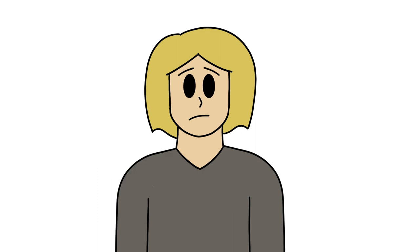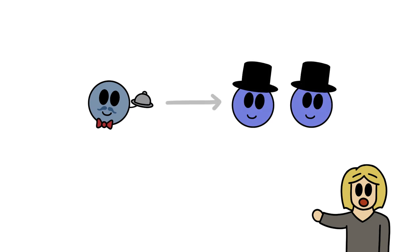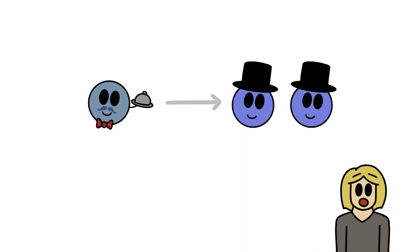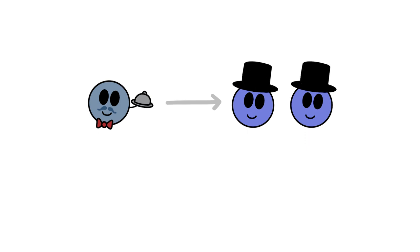The decay of a particle with a specific type is not always the same. We can't say that the Higgs particle always decays into, let's say, top quarks, because it doesn't. Sometimes, yeah, but not always. A decay to a specific set of final particles is called a decay channel, of which there are very often many.